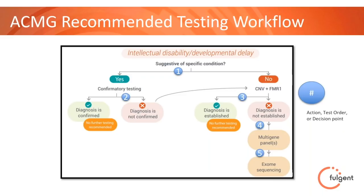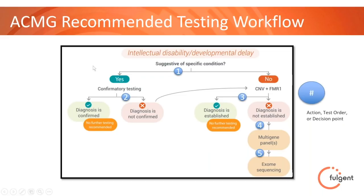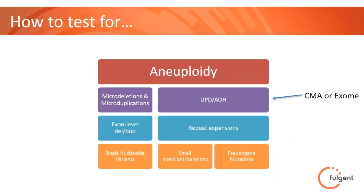It can get extremely expensive if you follow this to the line. If you're not suggestive of a clinical condition, you're doing a microarray for CNVs and fragile X, which is negative at least 80% of the time. When a diagnosis is not established, guidelines say you should do a panel or potentially exome — maybe a panel then exome. At this point, you've done a large number of tests, had a lot of consults, and had to discuss a lot of different results. The reason for all this is because the methodologies are so disparate.